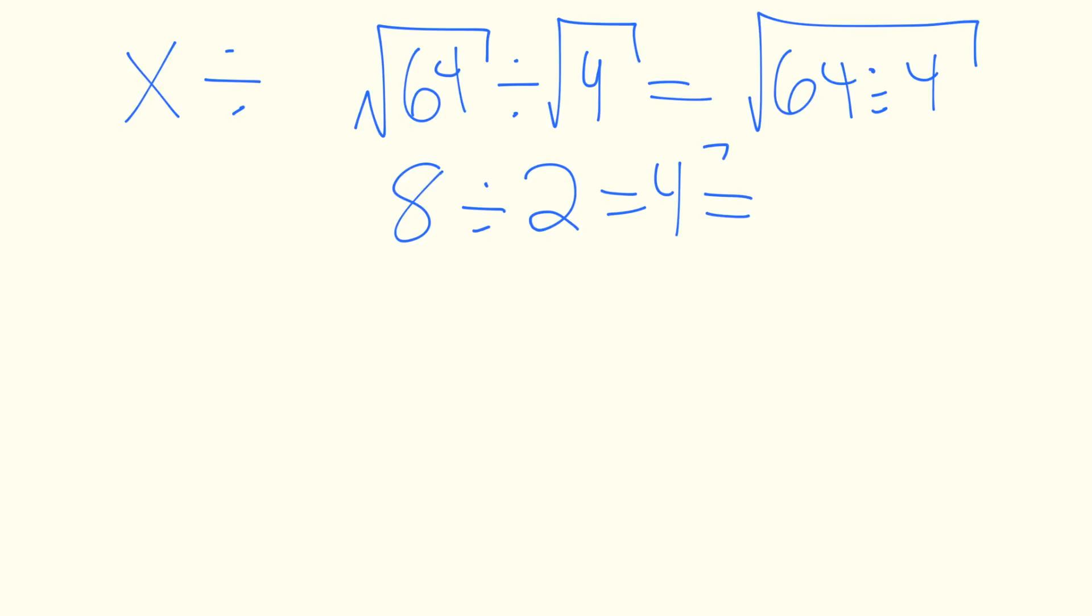Now, let's take a look at the square root of 64 divided by 4. If you punch 64 divided by 4 into a calculator, you'll see that it's equal to 16. The square root of 16 gives us 4.